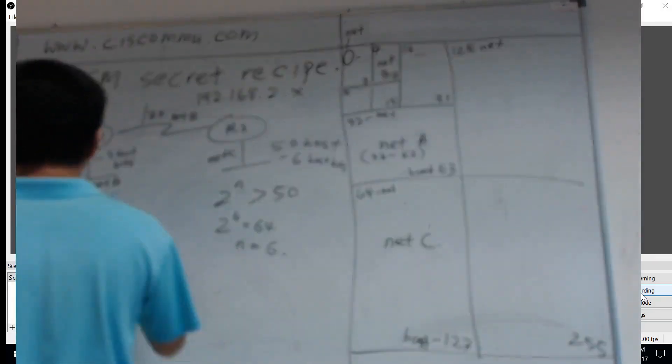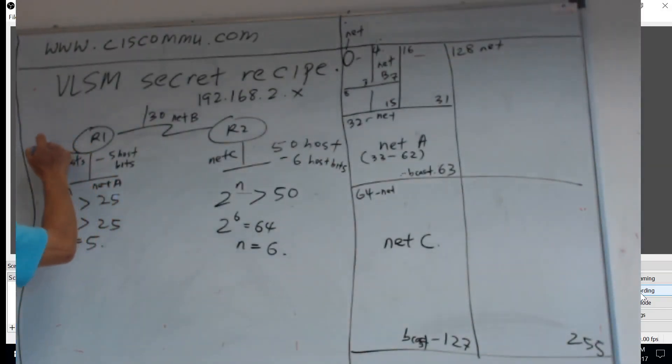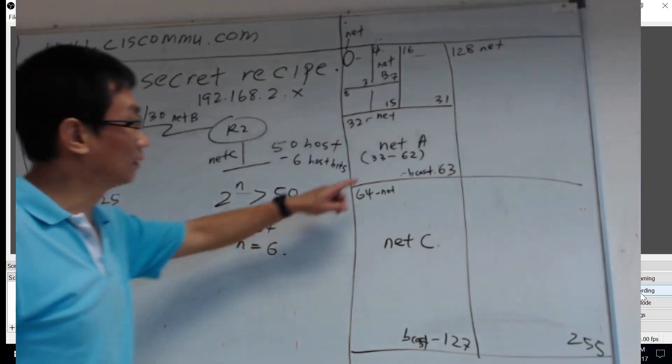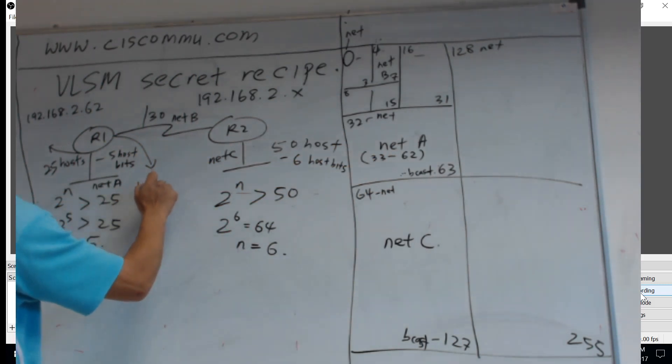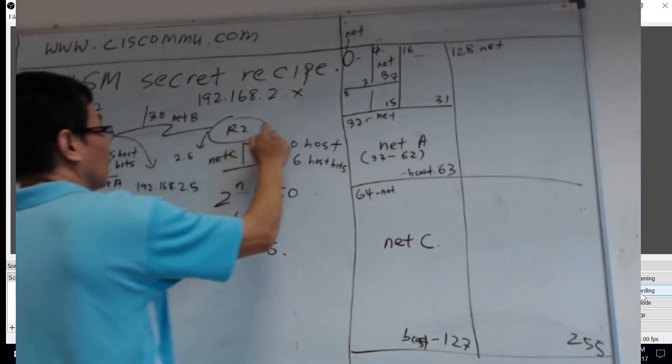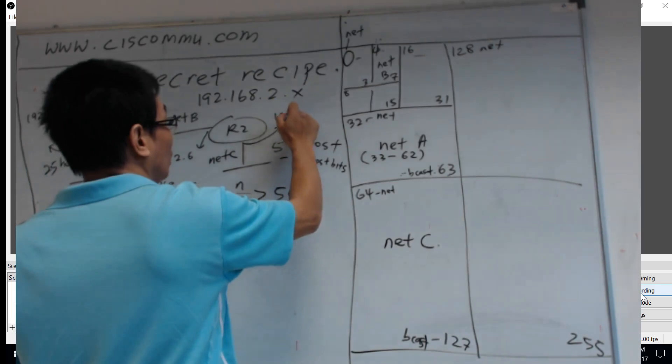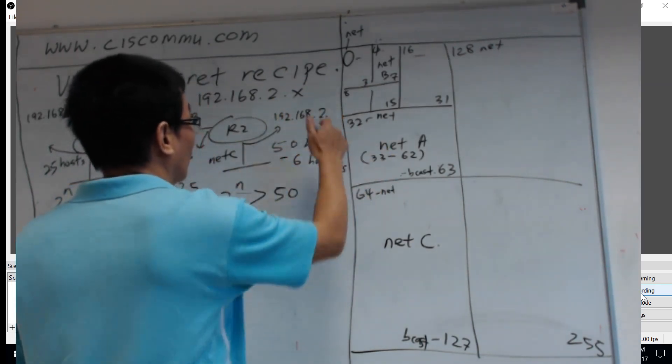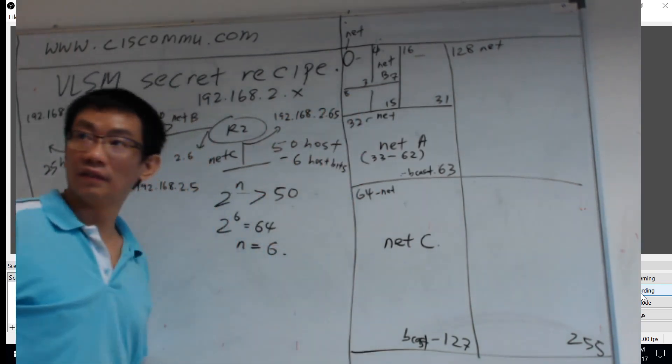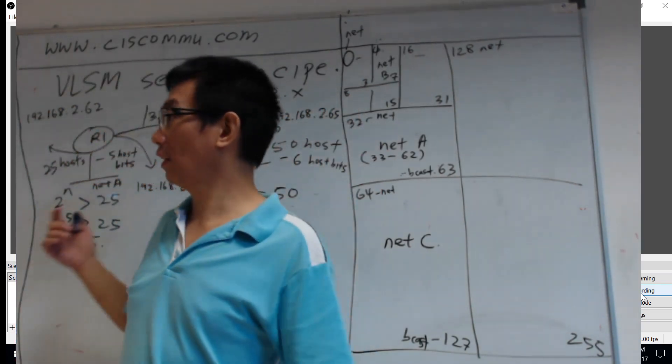So now you put in the IP address. Here will be 192.168.2.1. Here will be 192.168.2.5. Here will be 2.6. Here will be 192.168.2.33.